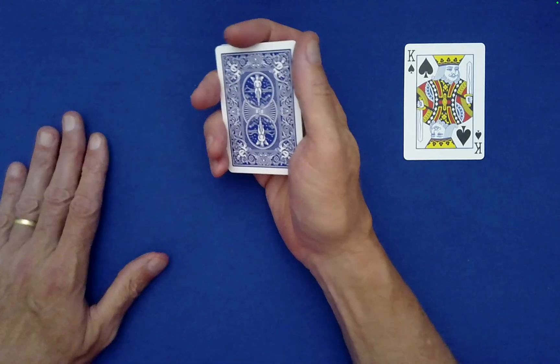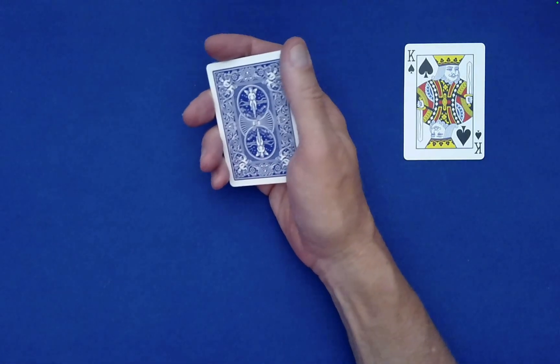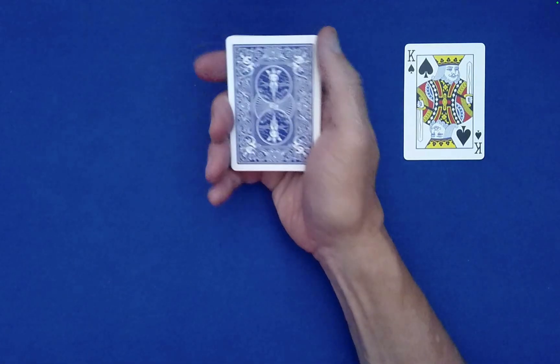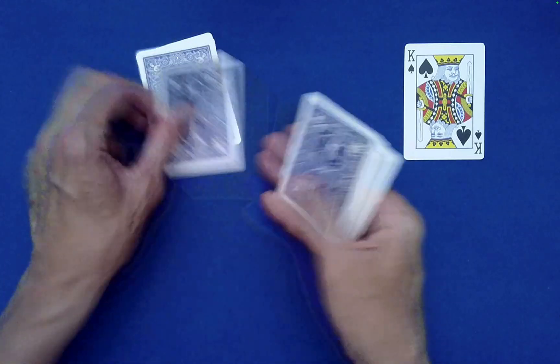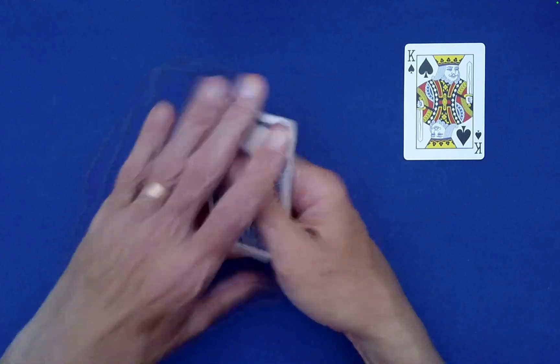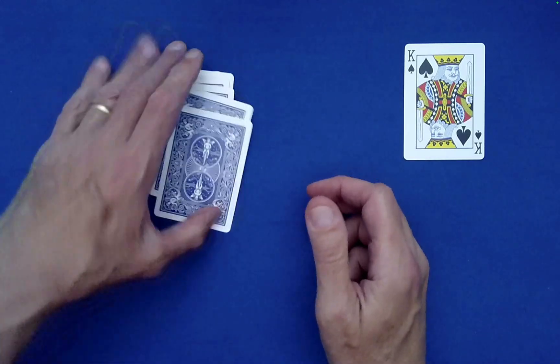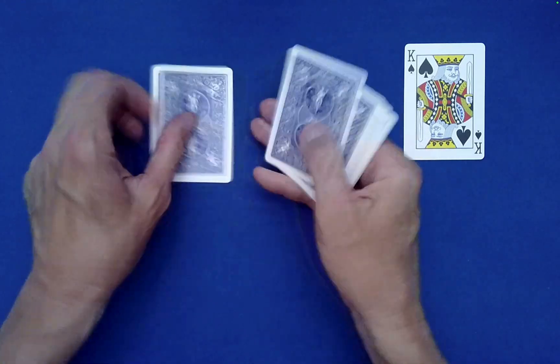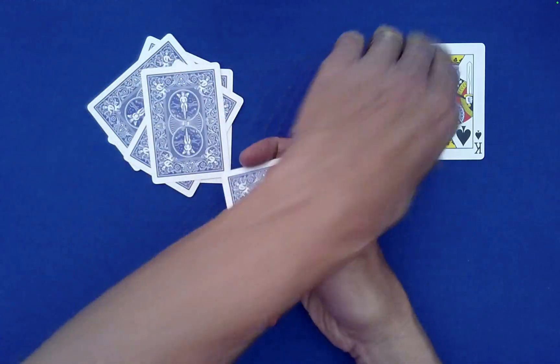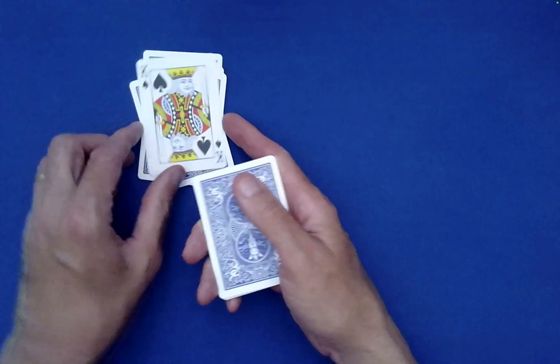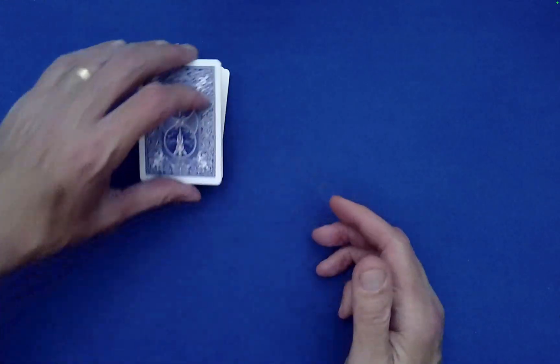From here, the spectator now needs to do a similar procedure for the king of spades. So K-I-N-G, drop the rest on top, O-F, drop the rest on top, S-P-A-D-E-S, and we'll drop the king of spades on top and bury him as well.